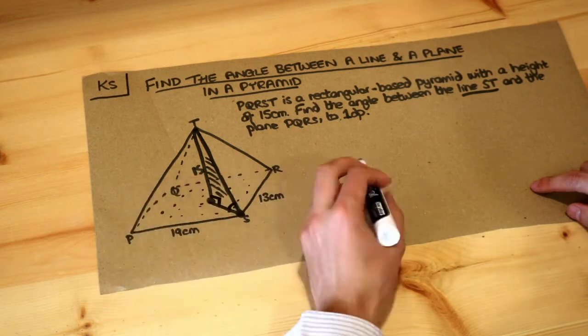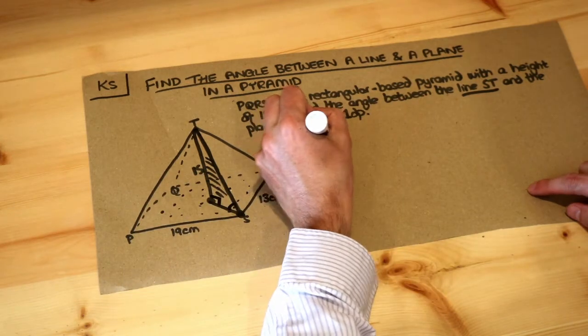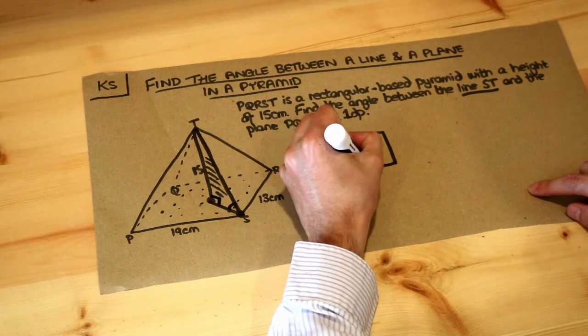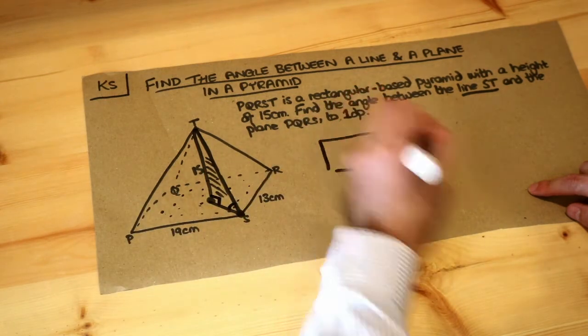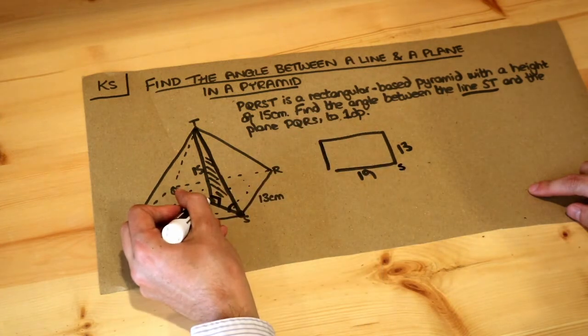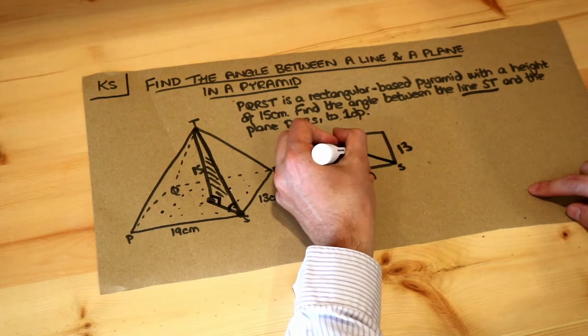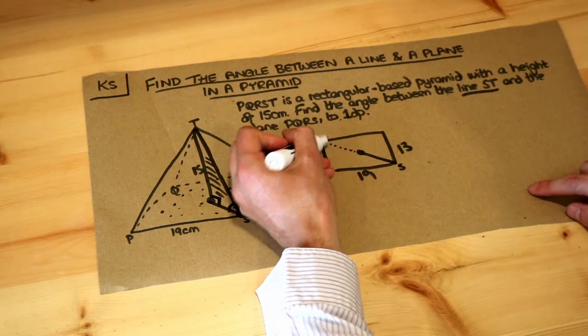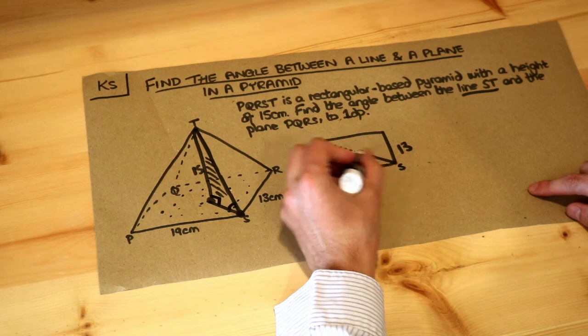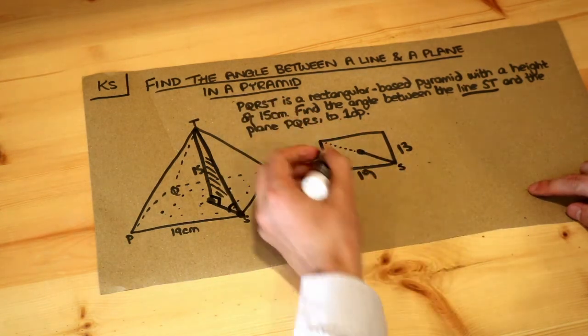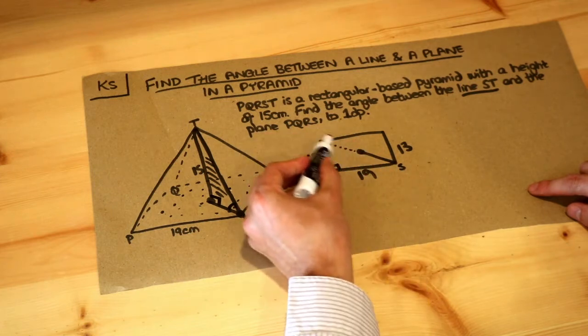Now, how are we going to find this length? Well, what we need to do is to consider the base of the pyramid. So we've got 19 here and 13. And we're trying to find from one corner, that's S here, to the middle of that rectangle here. Now, can you see that if we knew what that full diagonal was, we could just halve it to find this length? So if I just put the 13 here, can you see that we could just use Pythagoras theorem to find this longer length?